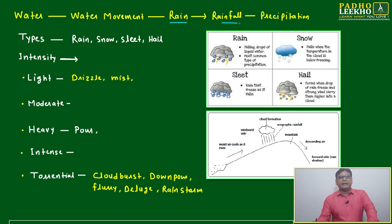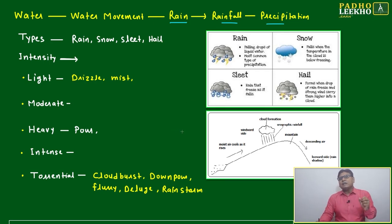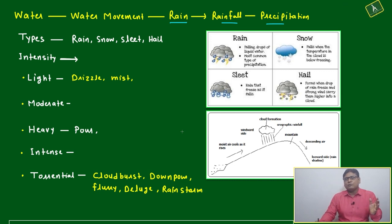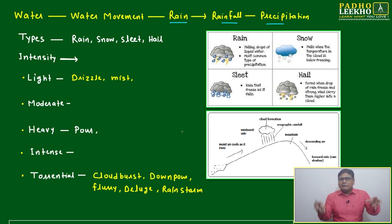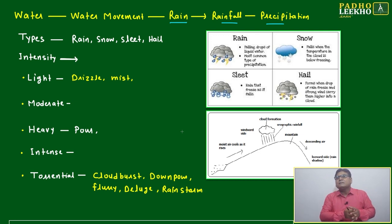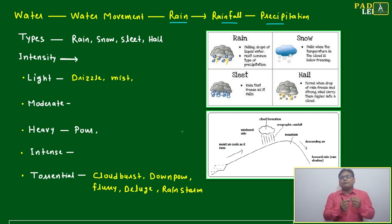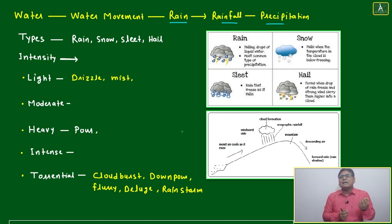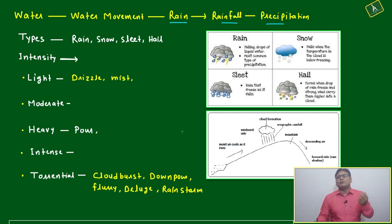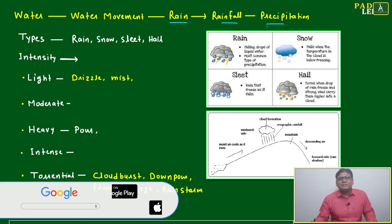Water movement, rain, rainfall, precipitation — if rainfall is converting into precipitation, I am explaining in a logical, connective way. Earlier, rain was just a downpouring in the form of water. Now what is happening is that rain is not coming in the form of exact water; it is coming in the form of a mixture of water and small ice particles or snow particles. That is called precipitation.